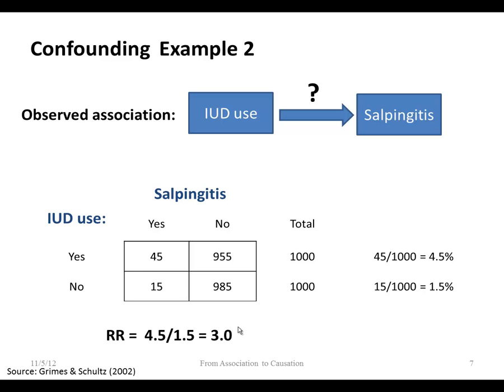Another example: an observed association between IUD use and salpingitis — a fallopian tube inflammation or infection. We do a two-by-two table where our exposure is IUD use and disease status is yes or no. The incidence rate for IUD use is 4.5%, for no IUD use is 1.5%, giving a relative risk of 3.0. That looks like a very strong association.